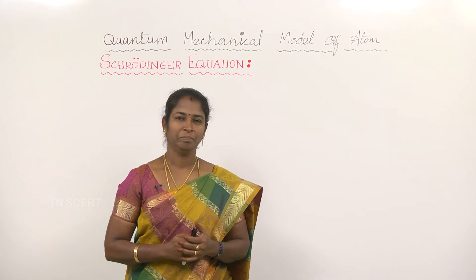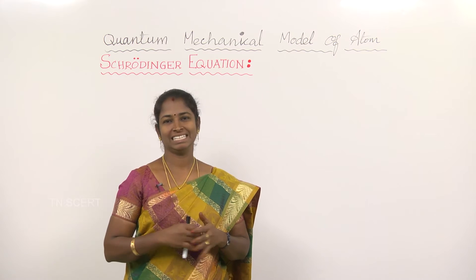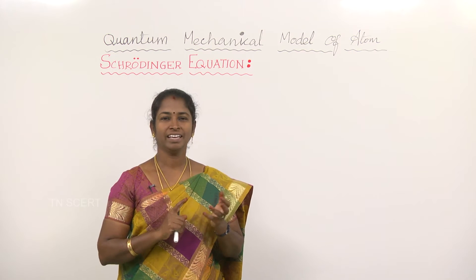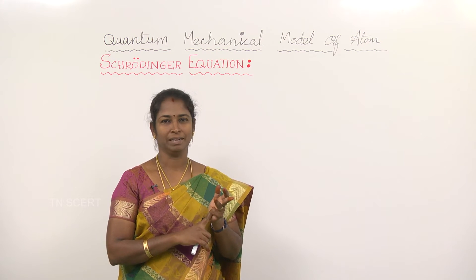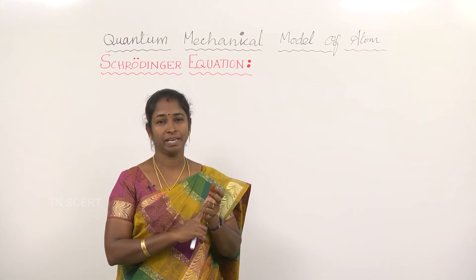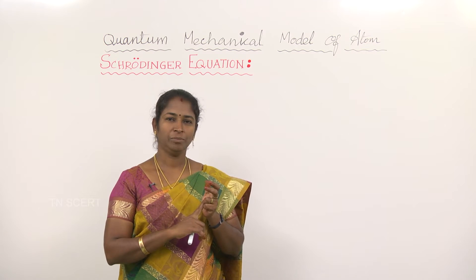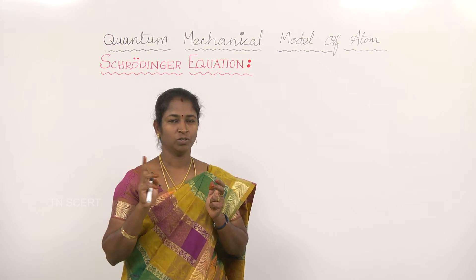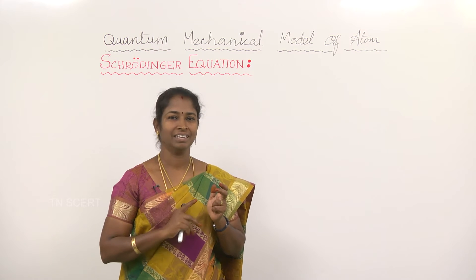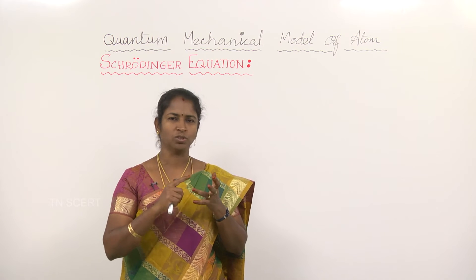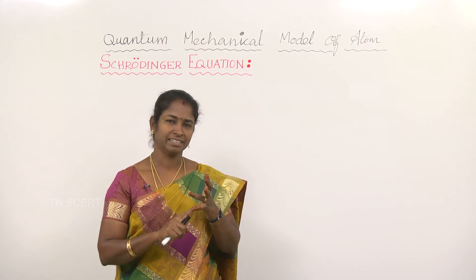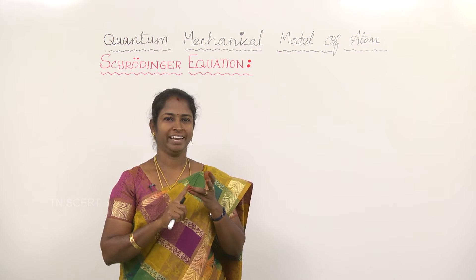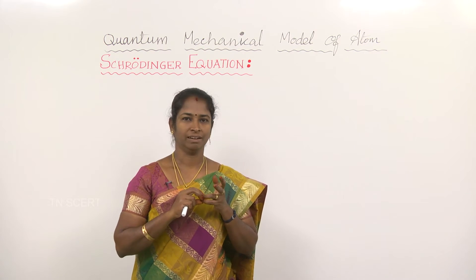We studied many atom models under classical mechanics. Classical mechanics fails to explain Heisenberg's uncertainty principle and the dual behavior of electrons. The dual behavior of electrons was explained by de Broglie, which was not dealt with in any classical mechanics. So on the basis of these two things — namely Heisenberg's uncertainty principle and the dual behavior of electrons — quantum mechanics was developed.